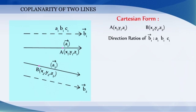Let a1, b1, c1 and a2, b2, c2 be the direction ratios of the vectors b1 and b2 respectively.